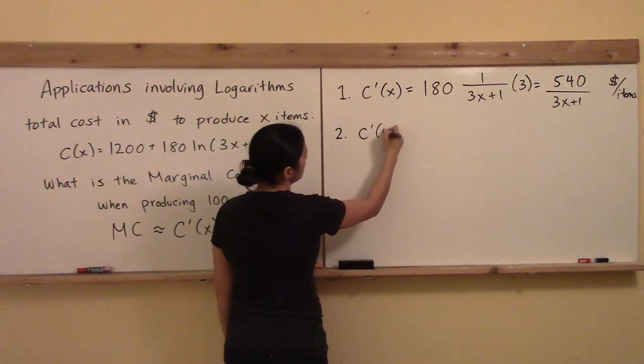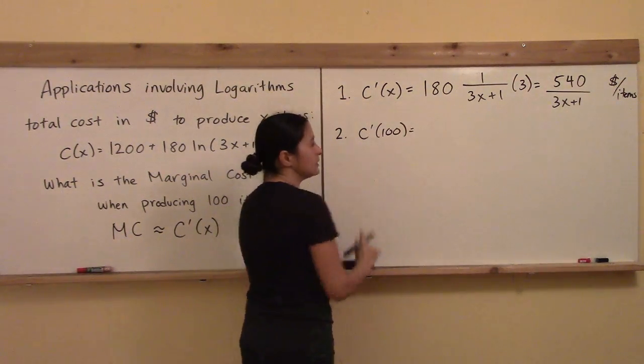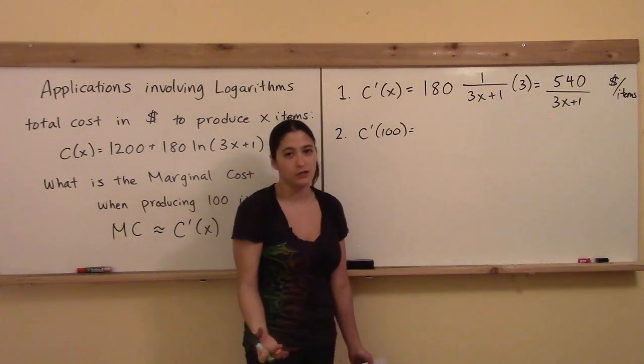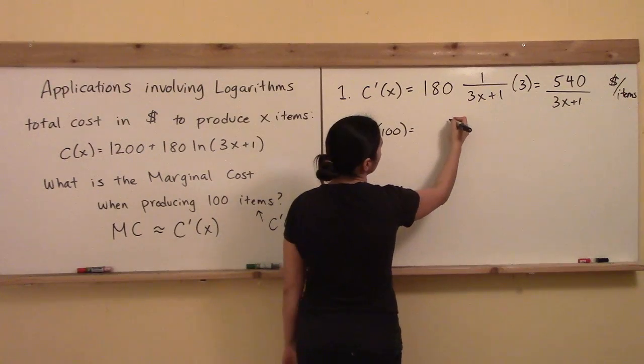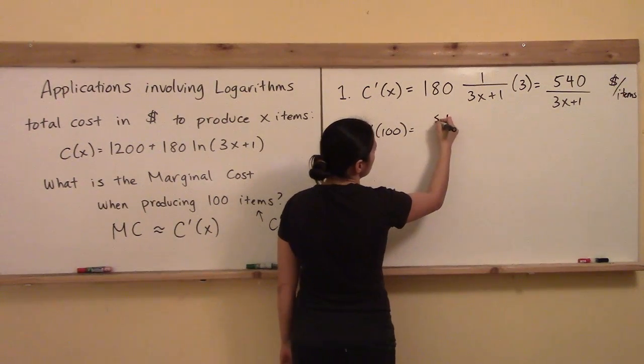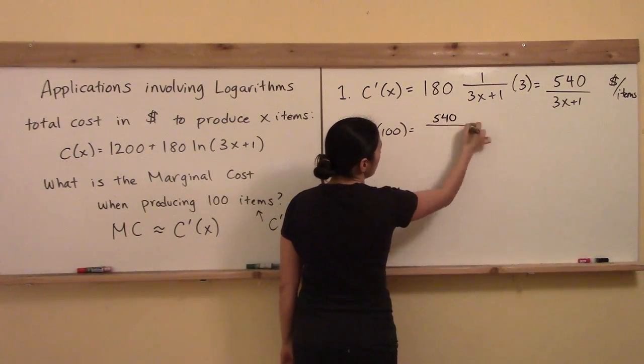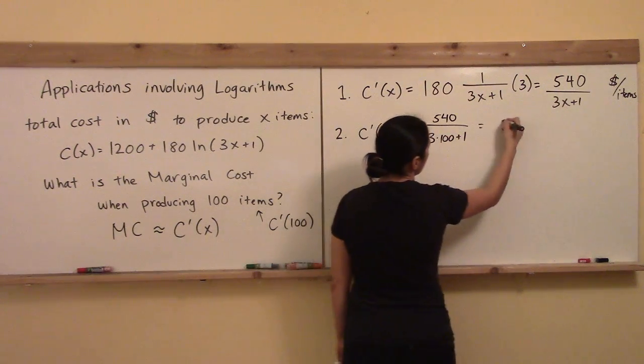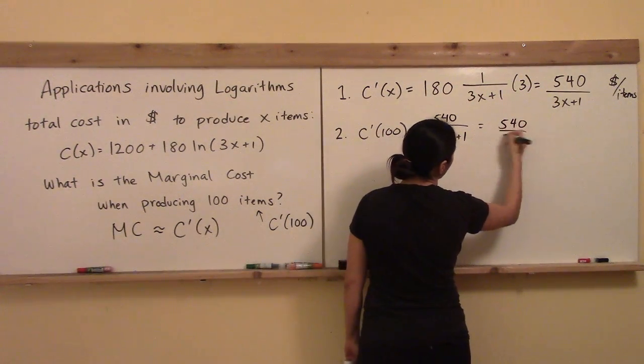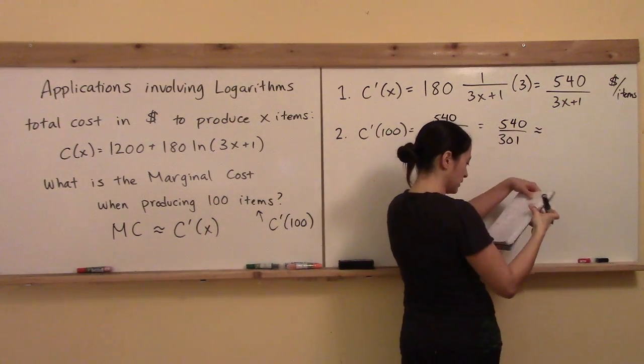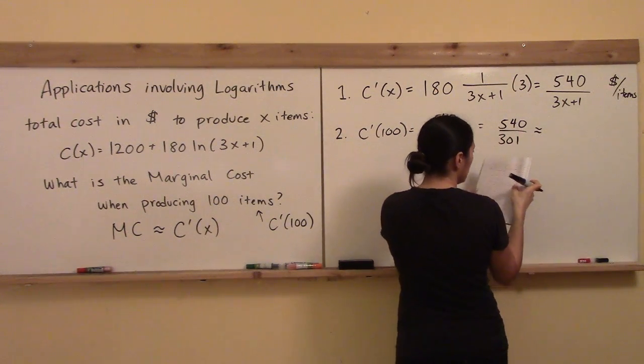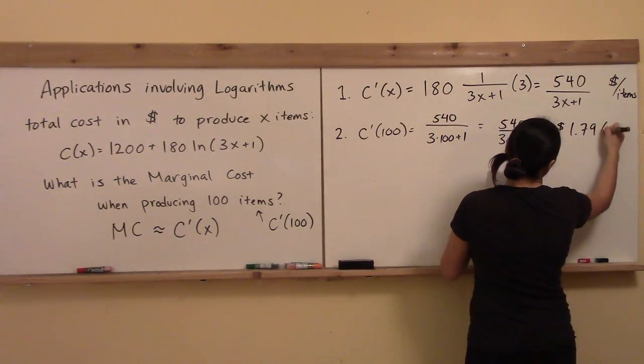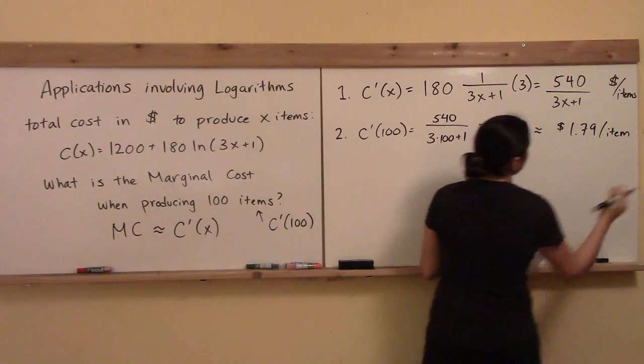For step number two, we just have to plug and chug with the number x equals 100. So to answer the question, what is the marginal cost at a production level of 100 items? We're just going to do 540 divided by 3 times 100 plus 1, and so that's going to be 540 divided by 301, and approximately to two decimal places, I've got the number $1.79 per item.